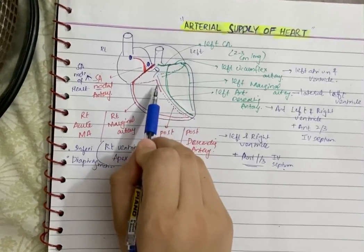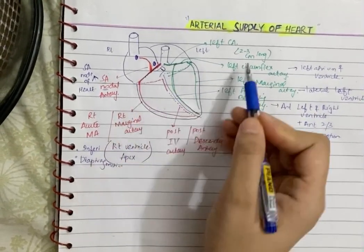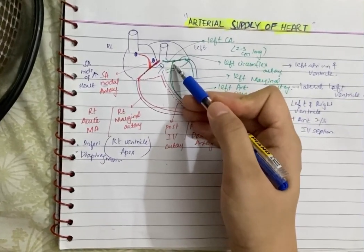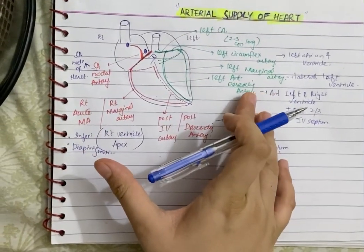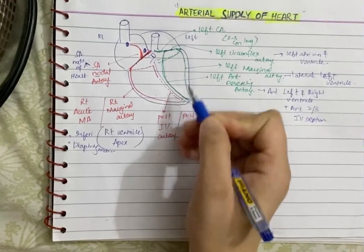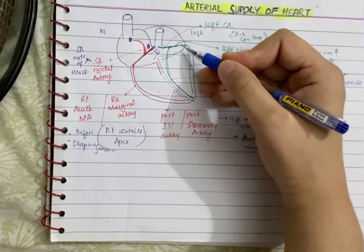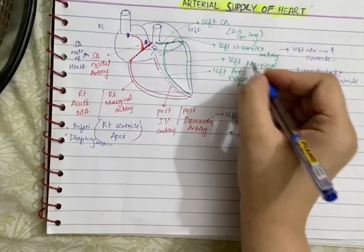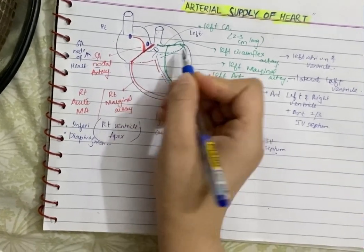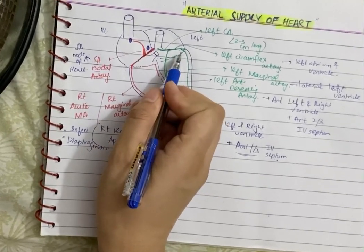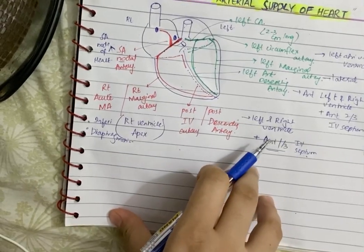The posterior descending artery also supplies the posterior one-third of the interventricular septum. The left coronary artery is smaller than the right — just two to three centimeters long — and gives off the left anterior descending artery, which supplies the anterior surfaces of the left and right ventricles plus the anterior two-thirds of the interventricular septum. The left circumflex artery supplies the left atrium and left ventricle, and at its margin gives off the left marginal artery — also called the left obtuse marginal artery because at its origin it forms an angle greater than 90 degrees — supplying the lateral part of the heart or mainly the left ventricle. This completes the full summary of the arterial supply of the heart.